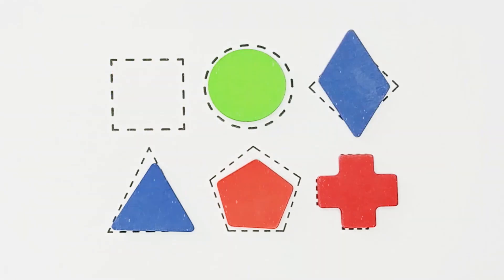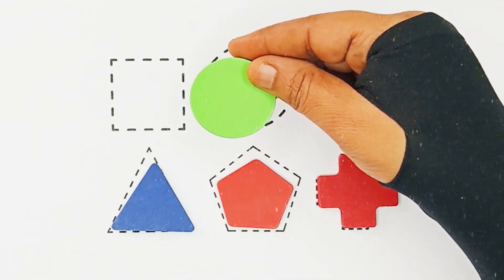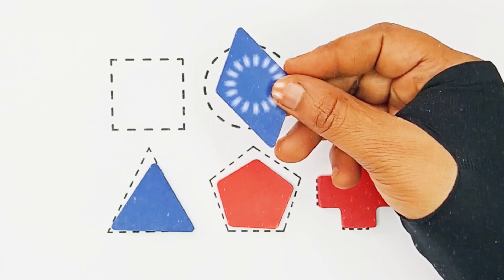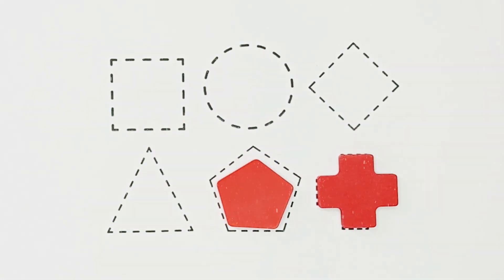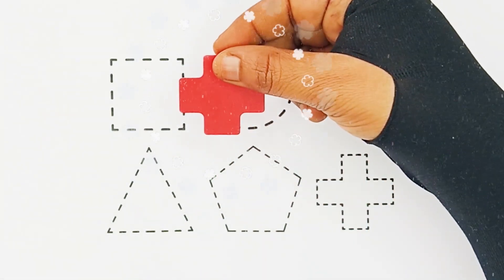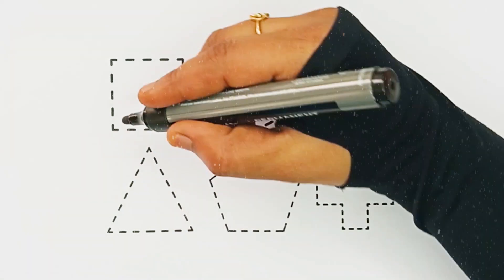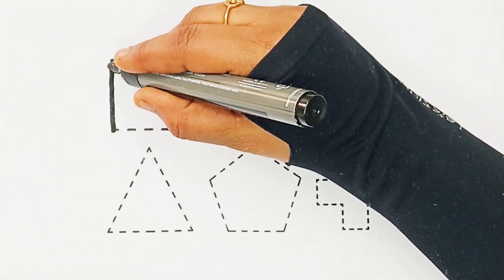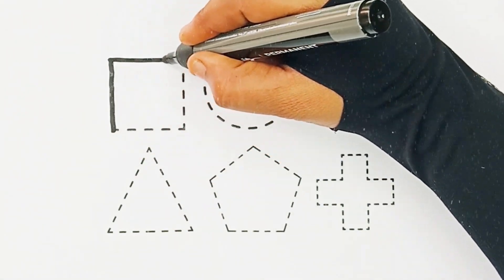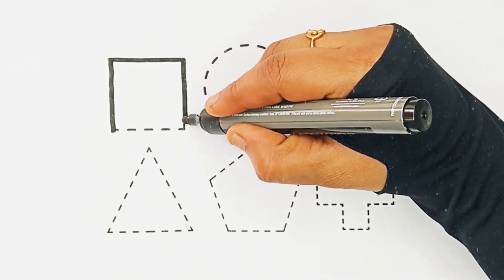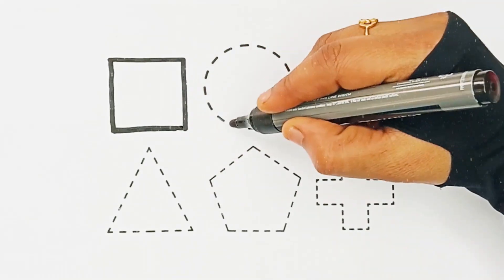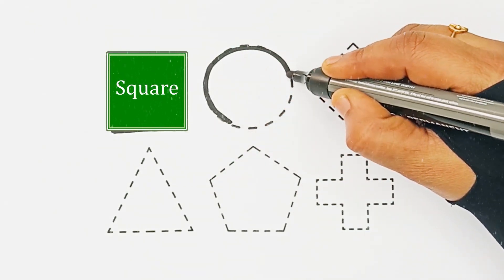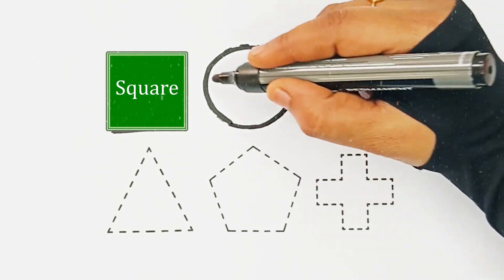Square. Circle. Rhombus. Triangle. Pentagon. Cross. Square. Square. Square. Circle. Circle.